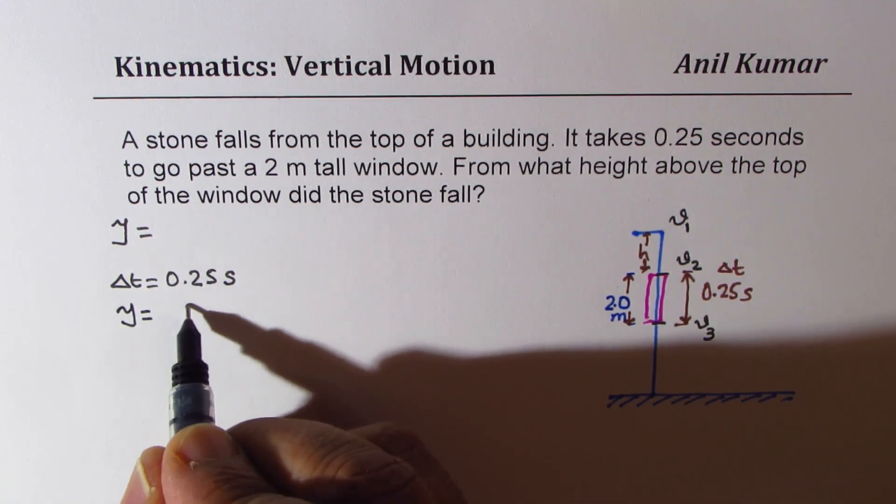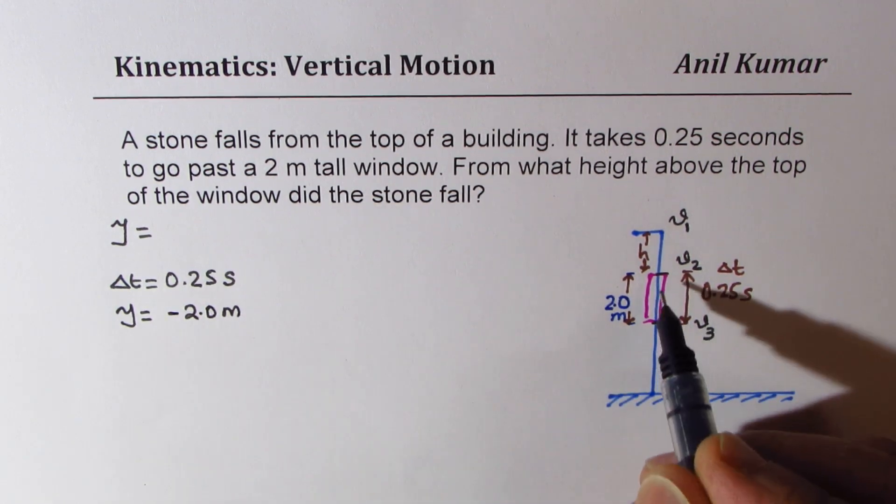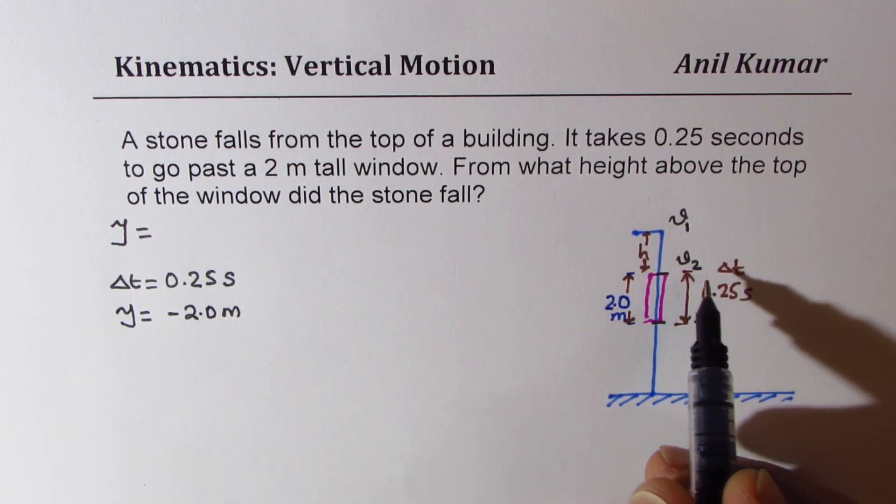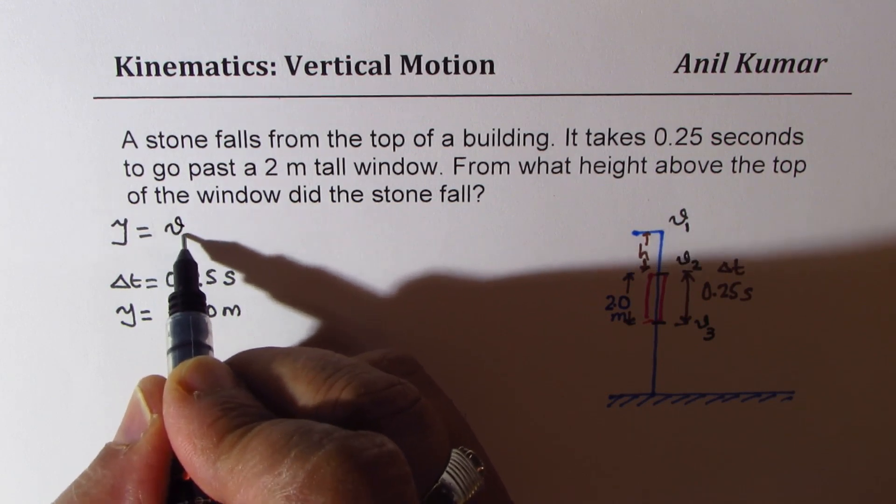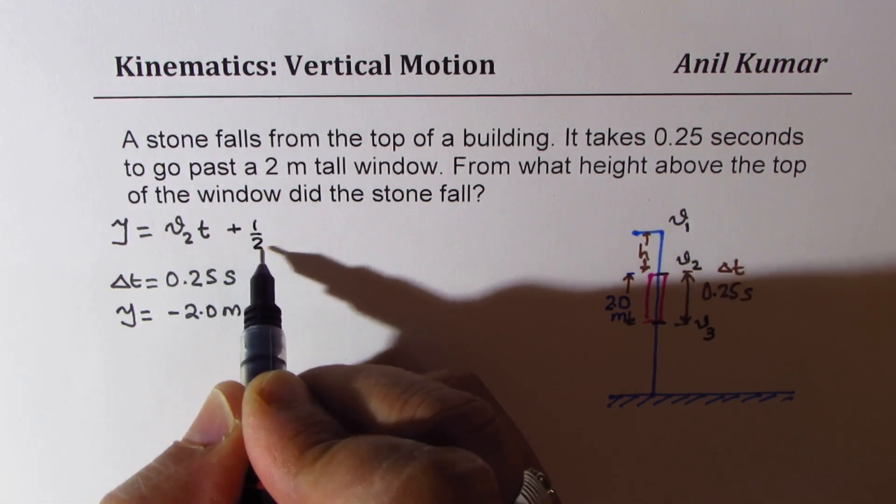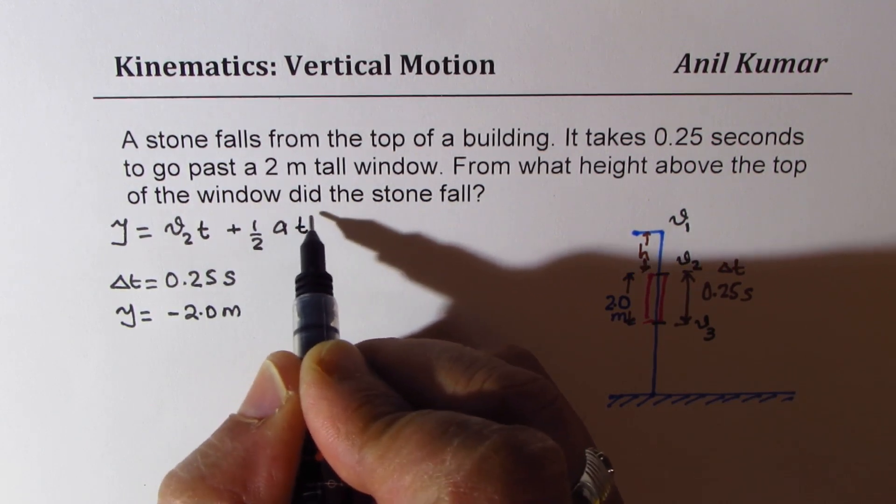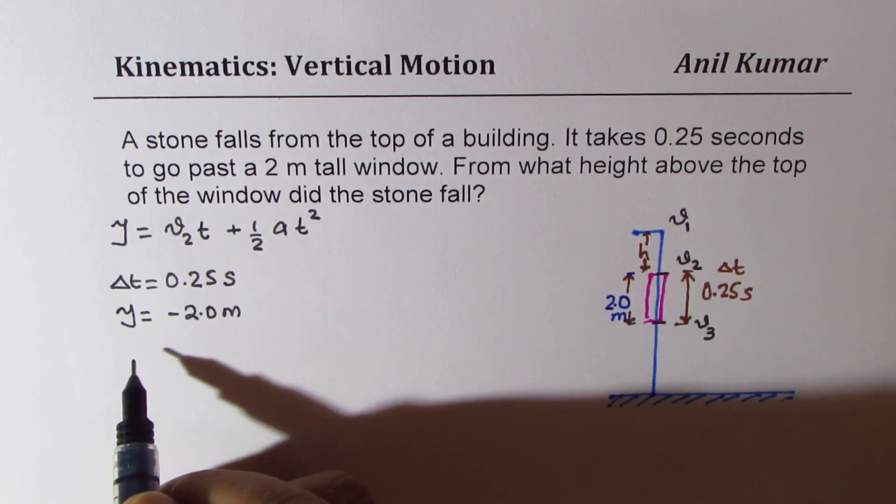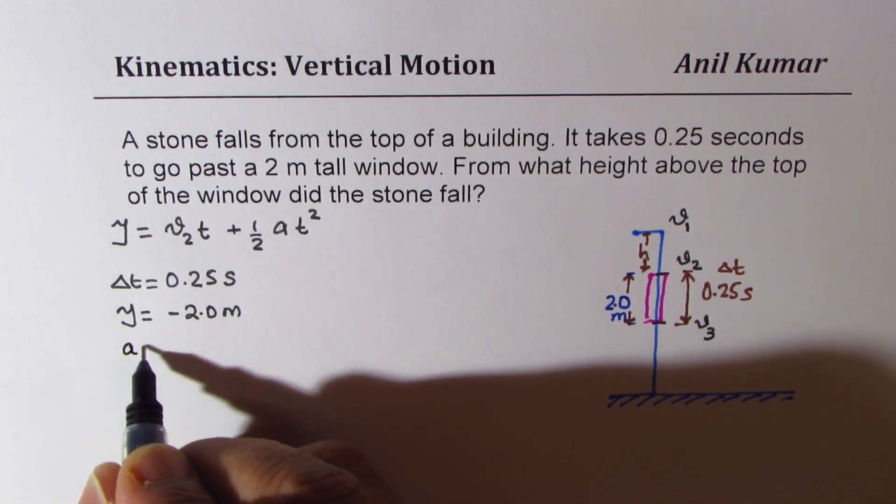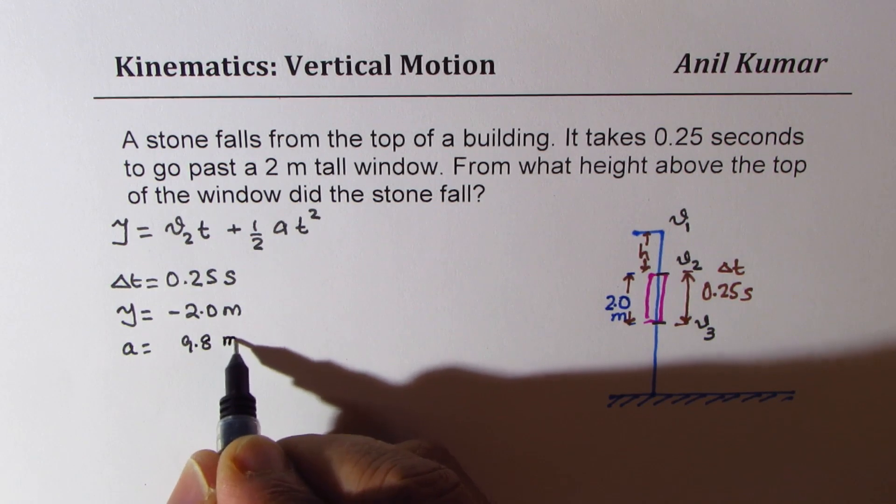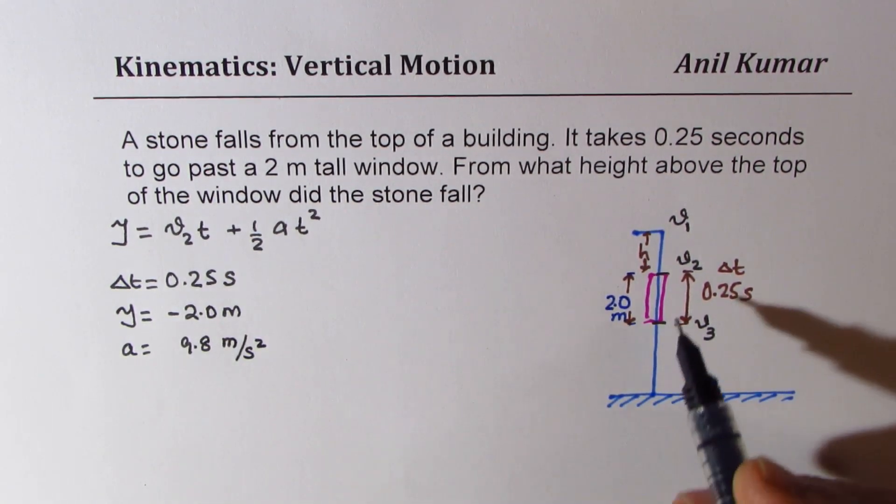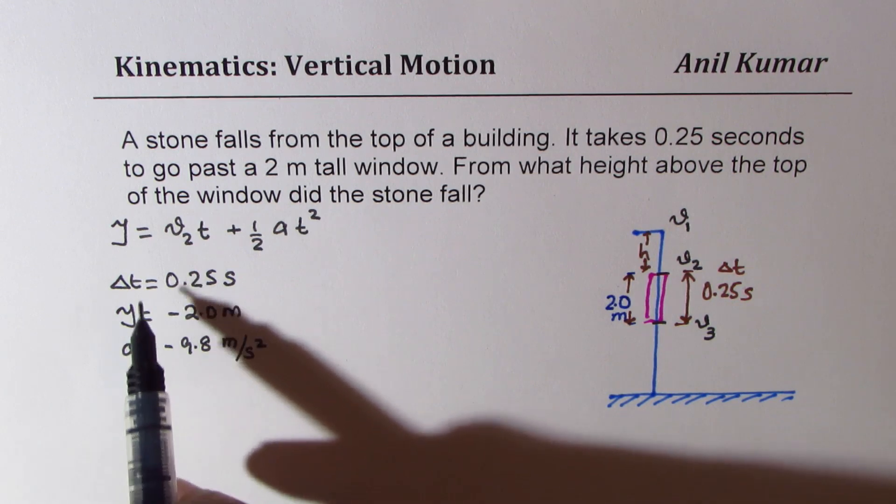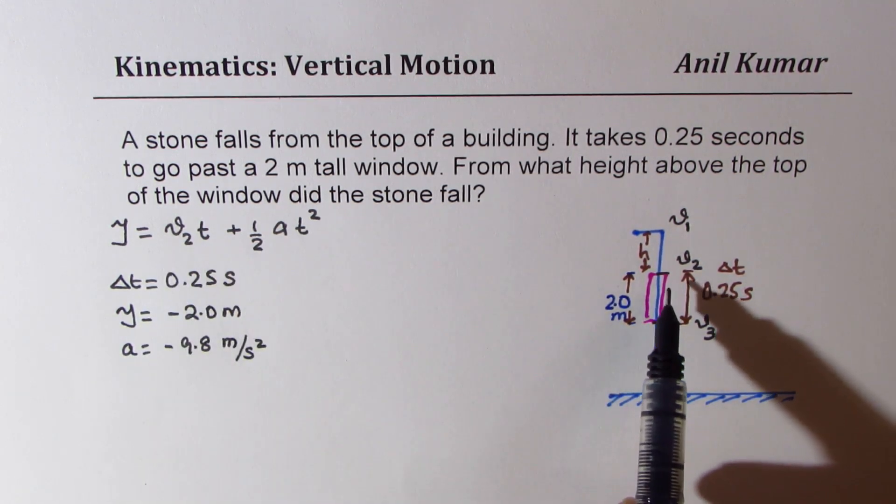Height y is 2.0 meters. We'll treat this as negative since it is falling. The formula we can use is velocity at this point, which is v2*t plus half a*t^2. Acceleration is 9.8, so a is 9.8 m/s^2, which will also be negative since it is going downwards.